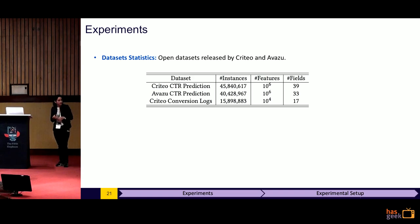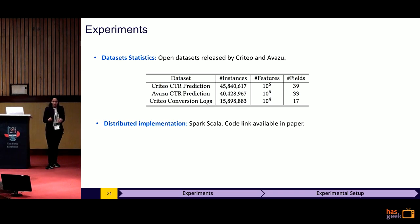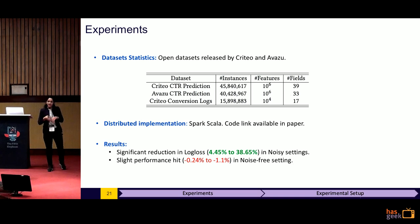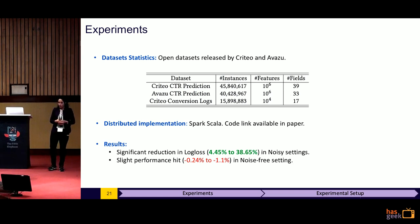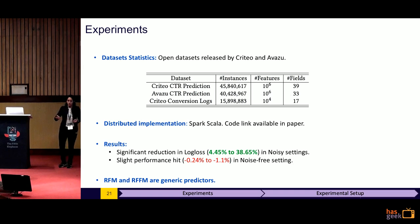For experiments, we used three real-world datasets from Criteo and Avazu. The datasets were regarding click-through rate prediction and conversion rate prediction. We provide a Spark Scala-based implementation — the code is open-sourced and the link is available in the paper. The results were very promising: we see a significant reduction in log loss in cases where there is noise in the data. If there is no noise in the data and you still use the robust formulations, we see a slight hit in performance. But in noisy cases, it is definitely something you could use. RFM and RFFM are also generic predictors, not restricted to computational advertising — we ran this on a credit card fraud detection dataset and got similar results.